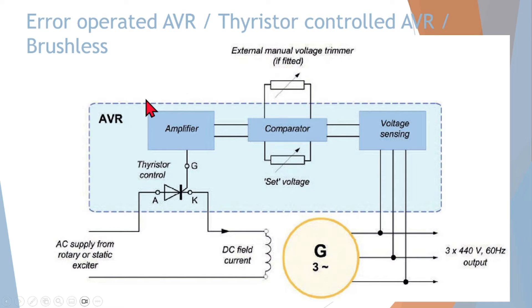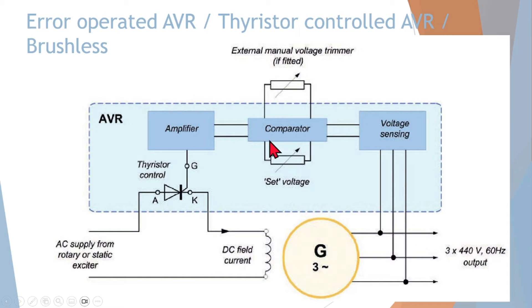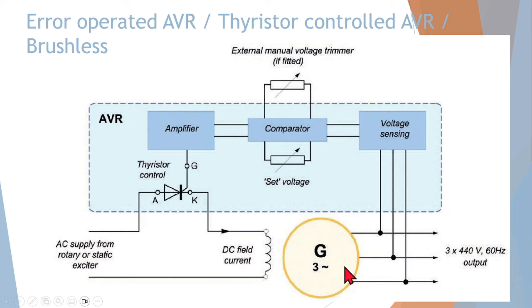Moving to the error-operated AVR — this diagram is taken from the Dennis Hall Marine Electrical Practice book. This is your generator and the bus bar. The AVR unit senses the bus bar voltage and compares it with our set voltage, producing an error if there is any difference. This error is fed into an amplifier, which amplifies the signal and controls a thyristor circuit to control the excitation voltage. As the excitation DC supply varies, it will vary the generator output.